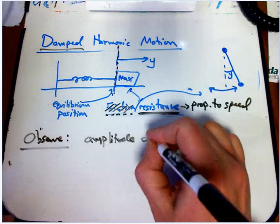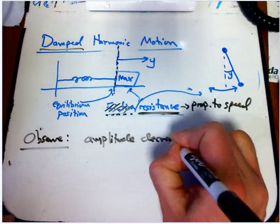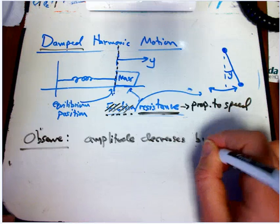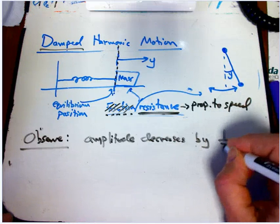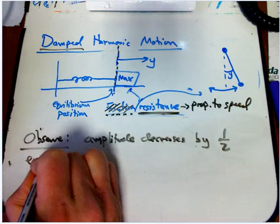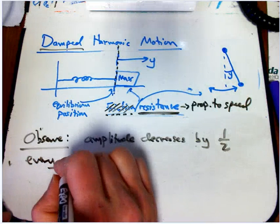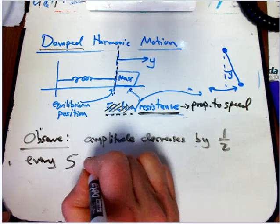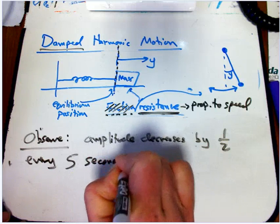The amplitude decreases by, let's say, a factor of one half, sort of like a half-life thing, every... I think my example I was going to do on the computer, it was like every five seconds.